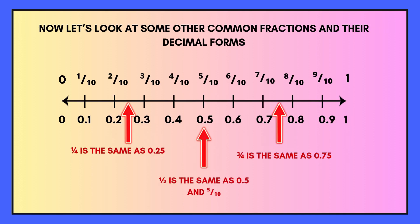Now let's look at some other common fractions and their decimal forms. The first red arrow shows one quarter, which is the same as 0.25. You can see that on the number line 0.25 is between 0.2 and 0.3, and it's also between two tenths and three tenths. The second red arrow shows a half, which is the same as 0.5 and five tenths. The final red arrow shows three quarters, which is the same as 0.75.